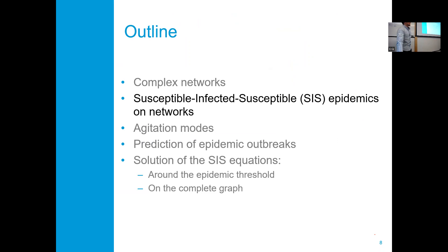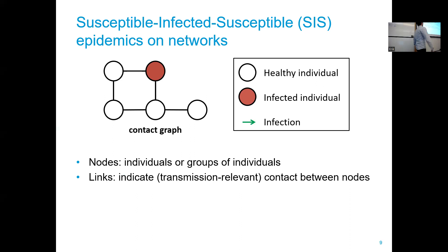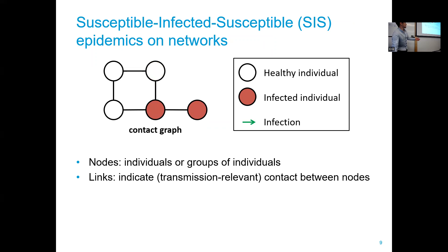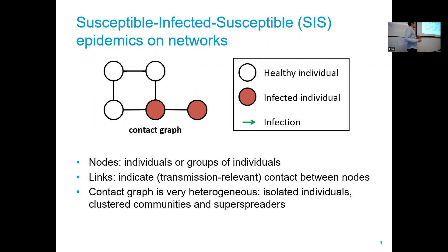We now focus on the SIS epidemic model on networks. We have a contact graph with five nodes, where nodes represent individuals or groups, and links indicate transmission-relevant contacts such as friendships or regular contacts. An infection spreads via links, infecting other nodes, while nodes can cure independently. The contact graph is heterogeneous — it may contain isolated individuals, cluster communities like sports clubs, and super-spreaders who have many parties and contribute heavily to spread.